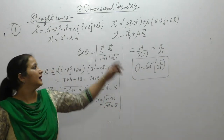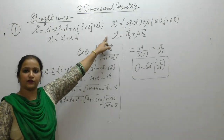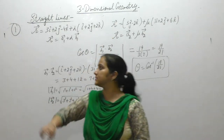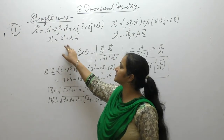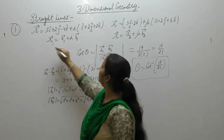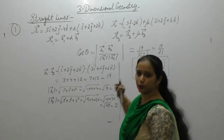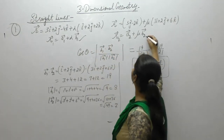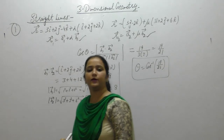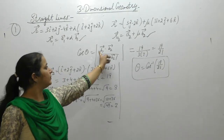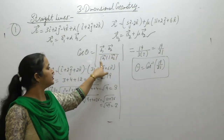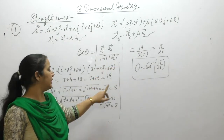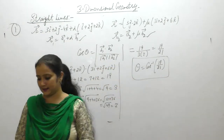If the lines are given in vector form, equate them with the general equations r1 = a1 + lambda·b1 and r2 = a2 + mu·b2. From these we get the values of b1 and b2. The angle between the two lines equals b1·b2 divided by the magnitude of b1 times the magnitude of b2. Substitute the values and get the result.